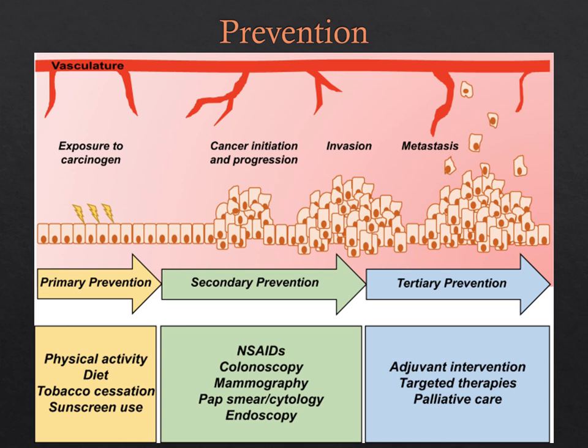We have three levels of prevention. Primary prevention involves physical activity, changing your diet, and eliminating risk factors. Secondary prevention involves screening like Pap smears, mammograms, and colonoscopies. Tertiary prevention is treatment and mitigating the spread — someone has already been diagnosed and treated, and now they're preventing any secondary cancers or malignancies from forming.